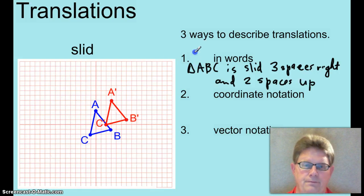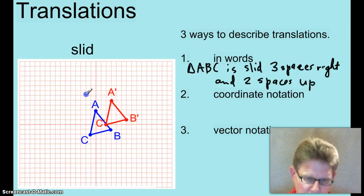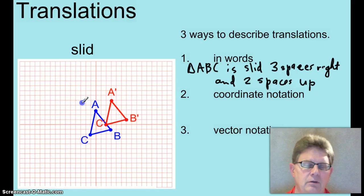Always give the left or right movement first, then the up or down movement. Because the left right movement is an X movement along the X axis, and the up or down movement is a Y movement along the Y axis. So X comes before Y, so we'll describe in words, first left or right, then up or down.